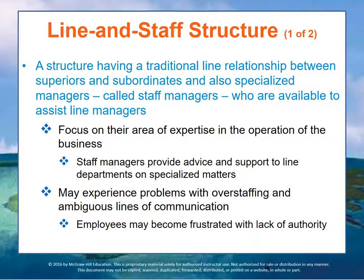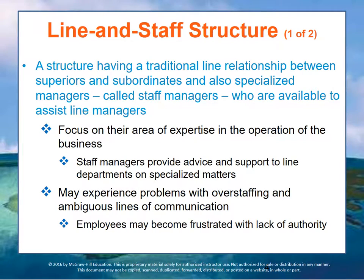The next structure is the line and staff structure. When an organization grows to a certain size, you want to build centers of expertise, or centers of excellence. You have the traditional superior-subordinate relationships, but you also have specialized expert areas — staff managers — whose organizations are there to assist line managers in specialized tasks like HR or engineering. Line managers focus on operating the business while staff managers provide advice and support to the line departments on specialized matters such as finance, law, engineering, human resources, and accounting.